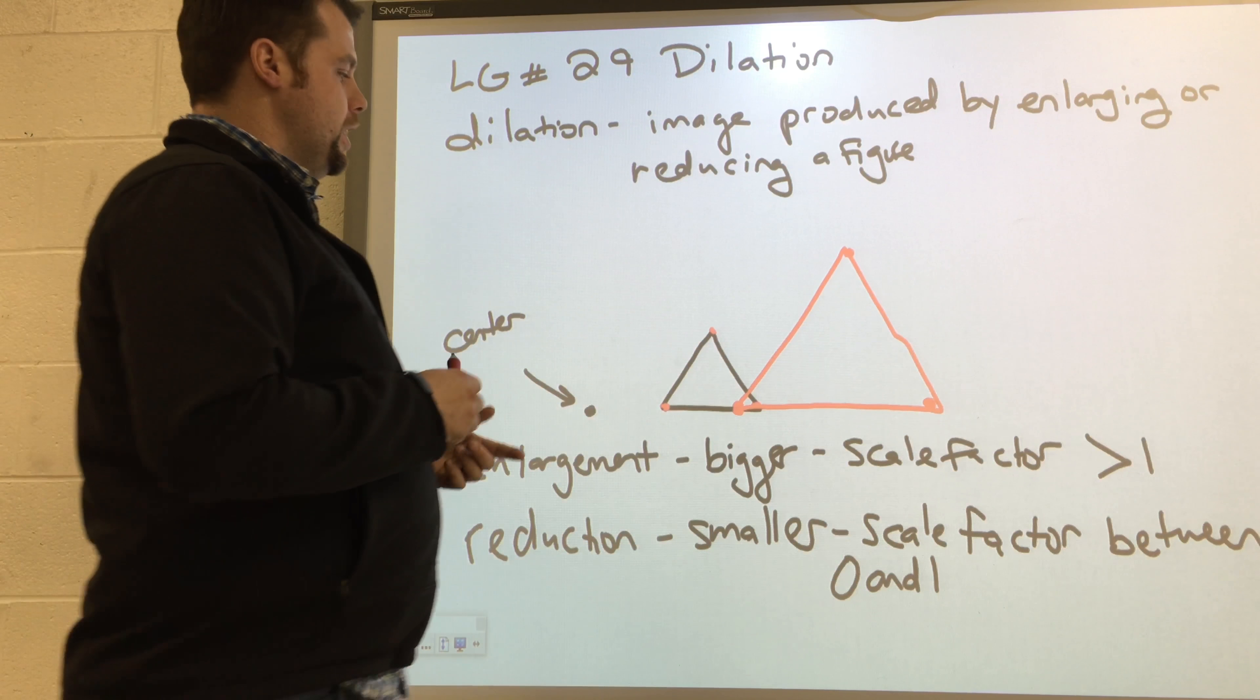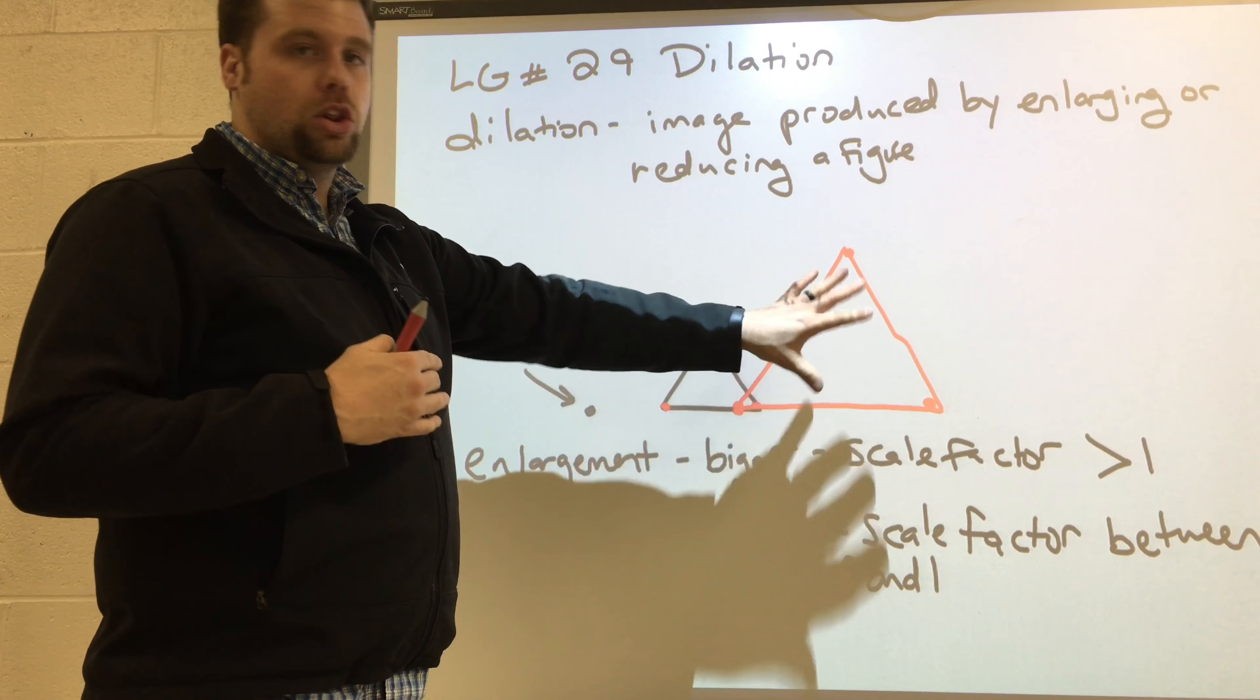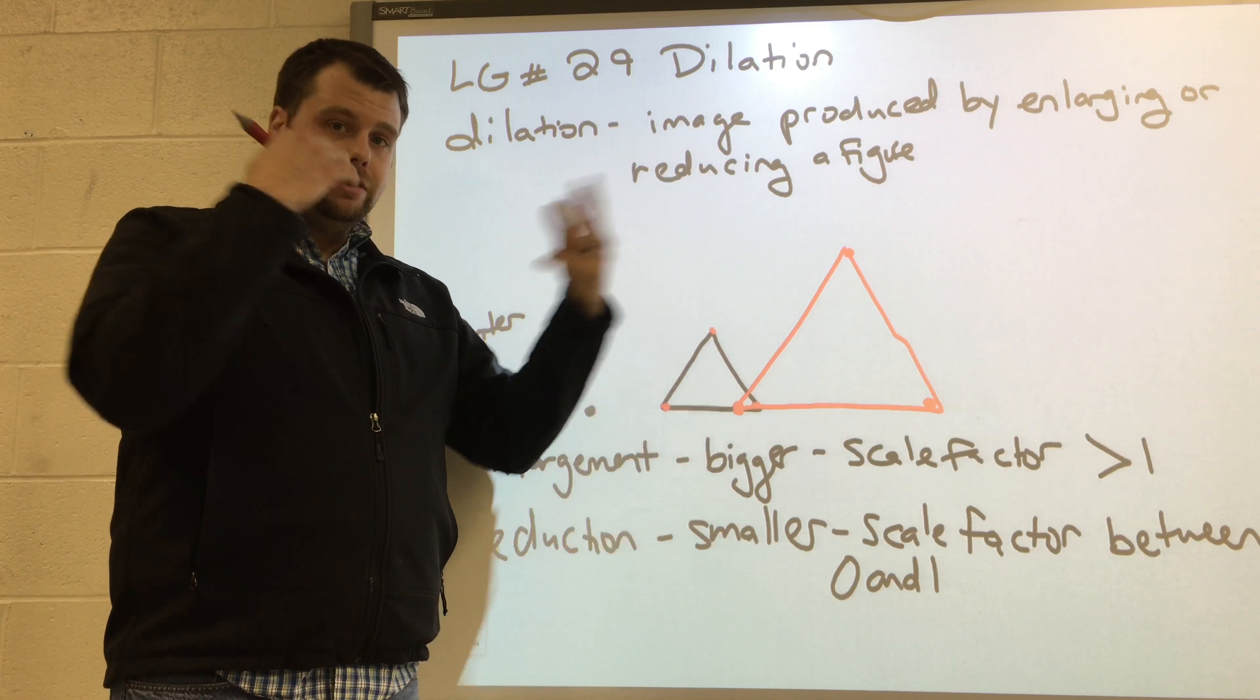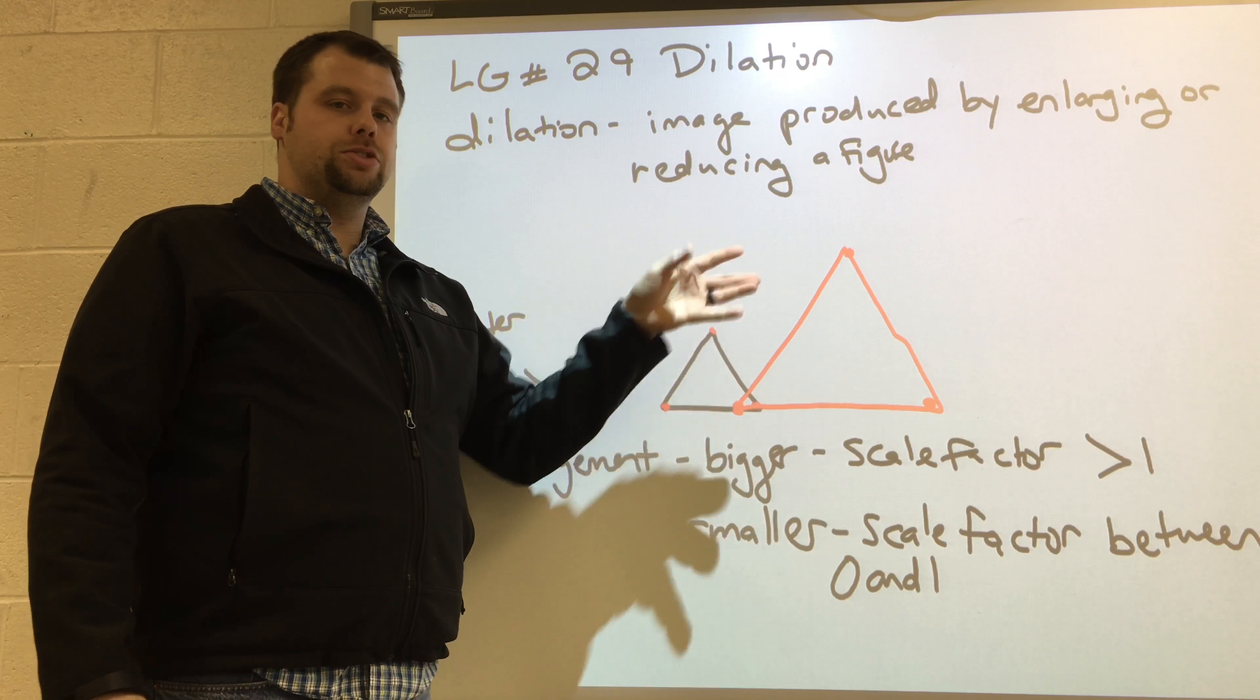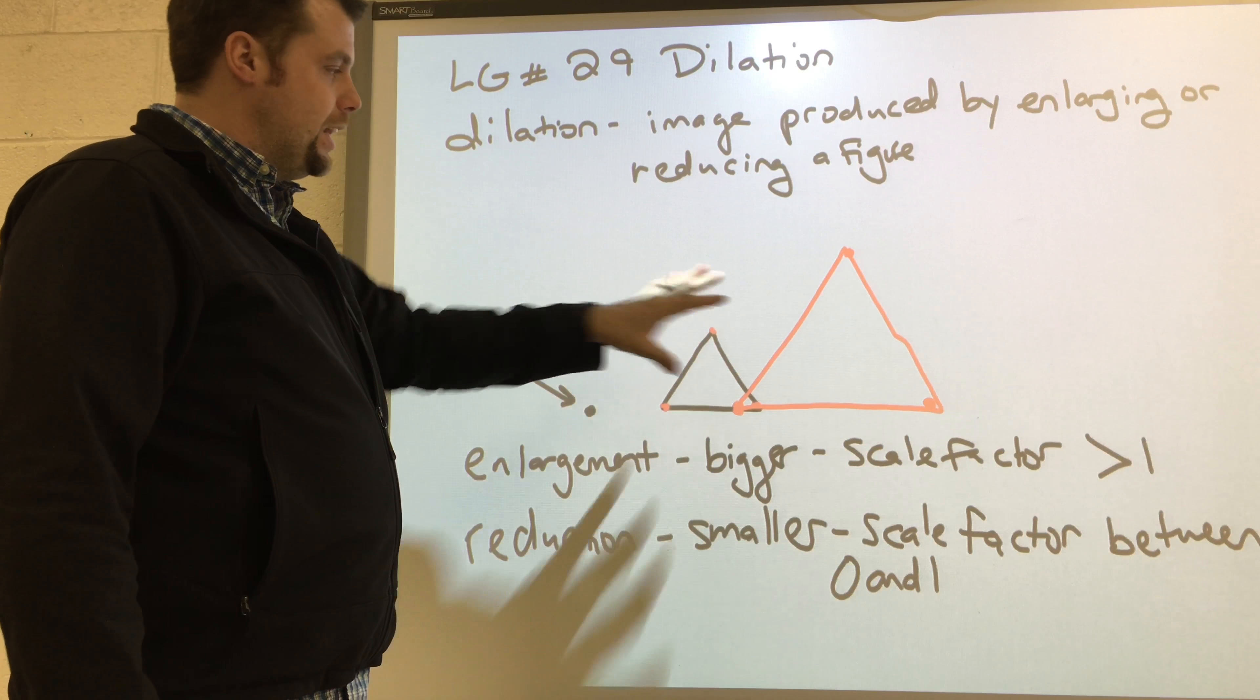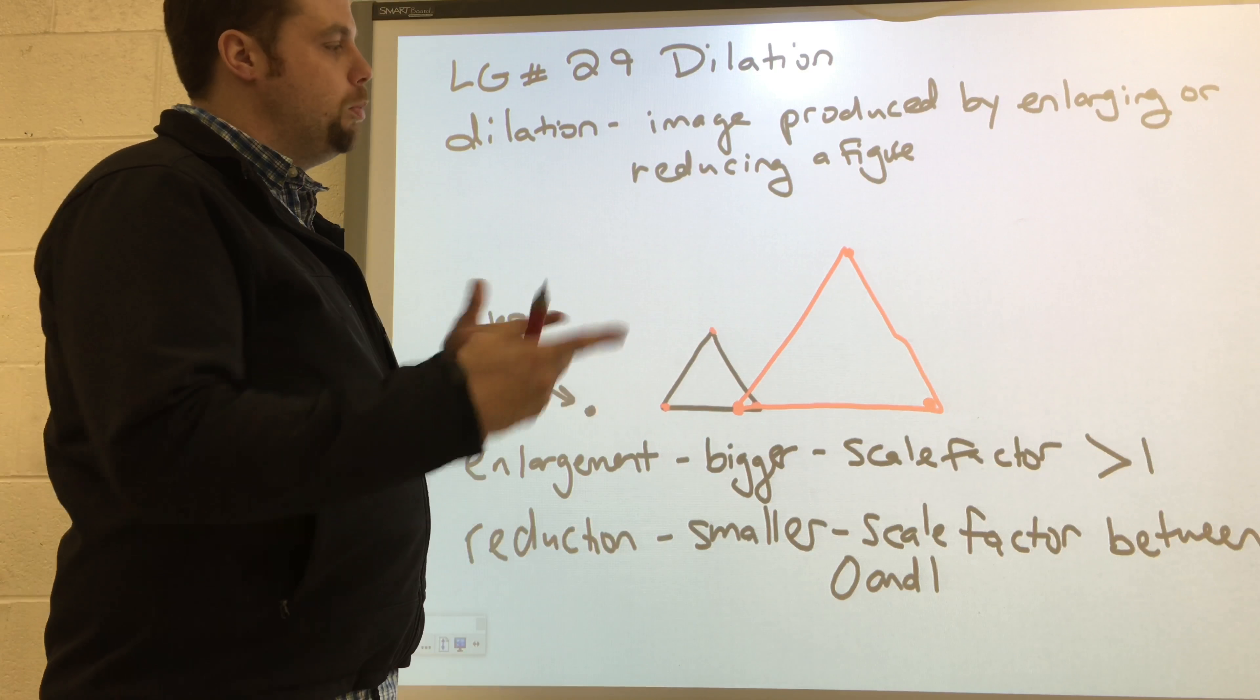In the reverse, if you want to make it smaller—an enlargement is a bigger dilation and the scale factor is greater than one. So in that case I made the scale factor two, I doubled everything.